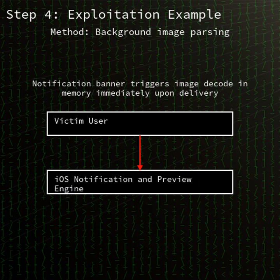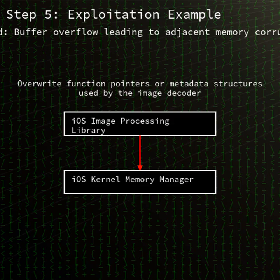CVE 2025-43300 is a memory corruption vulnerability due to an out-of-bounds write during image file processing. By feeding a specially crafted image to the system, an attacker can overwrite memory regions outside the intended buffer, enabling arbitrary code execution or denial of service conditions. Apple's image rendering component lacked proper bounds checking on certain image metadata fields.